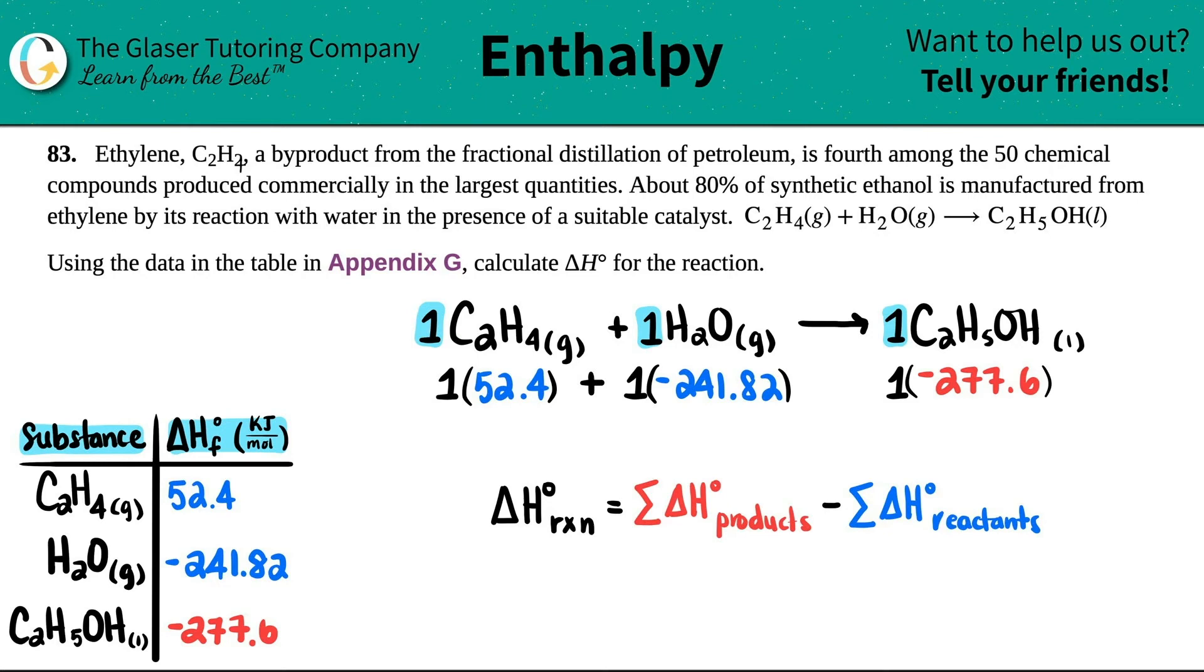So let's see what we get. Negative 241.82 plus 52.4. I get a negative 189.42. And then on this side, this is just the same number, right? Negative 277.6. So now we're ready. Delta H for the whole reaction is the product value, which is negative 277.6 minus the reactant value, which is negative 189.42. And we get our answer.